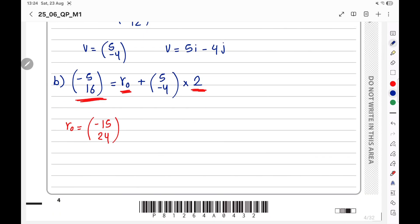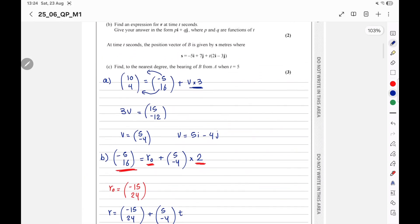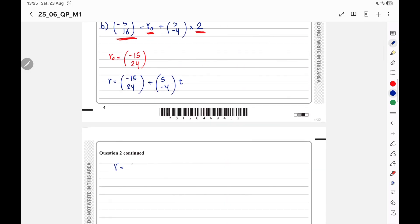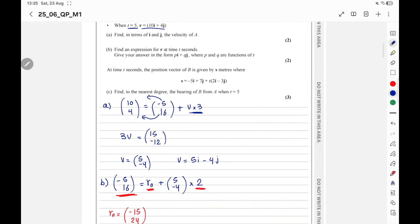Now it is so simple. Find R in terms of t. R equal R node, negative 15 and 24, plus the velocity, 5 and negative 4, multiply the time. He wants it in terms of i and j as well. So it will be negative 15 plus 5ti plus 24 minus 4tj. This is R in terms of t.